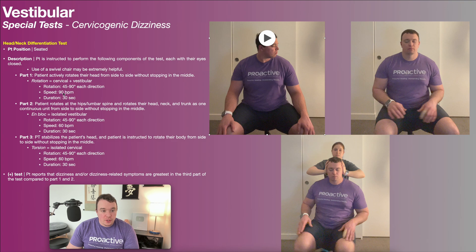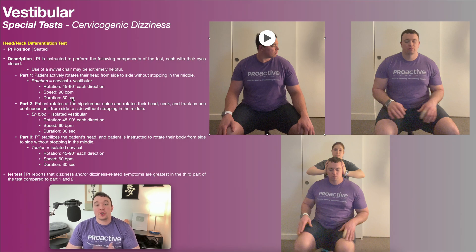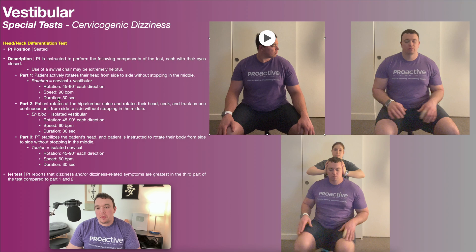The speed of that rotation should be 90 beats per minute. If you want to be exact you could use a metronome, but pretty much nobody does that. The patient should perform this rotation for 30 seconds, and of course you're assessing for anything like nystagmus or any subjective reports of dizziness from the patient. That's part one.